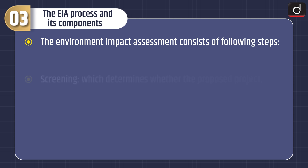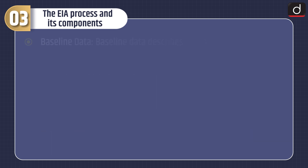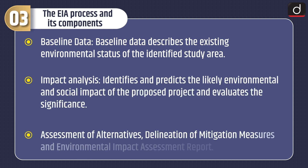Now let's discuss the EIA process and its components. The Environmental Impact Assessment consists of the following steps. Screening determines whether the proposed project requires an EIA and, if it does, the level of assessment required. Scoping identifies the key issues and impacts that should be further investigated. Baseline data describes the existing environmental status of the identified study area. Impact analysis identifies and predicts the likely environmental and social impact of the proposed project and evaluates its significance. This is followed by assessment of alternatives, delineation of mitigation measures, and the environmental impact assessment report.